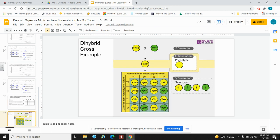So here's a completed cross. The two traits are pea color. Dominant is yellow. Recessive is green. And pea shape. Dominant is round and recessive is wrinkled.